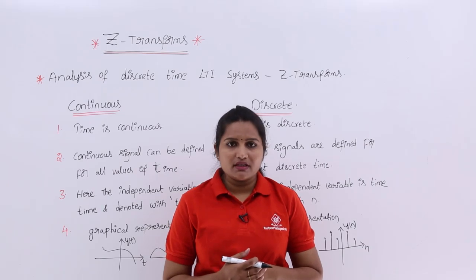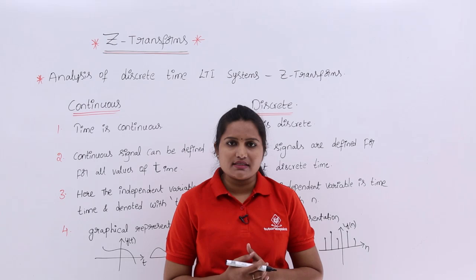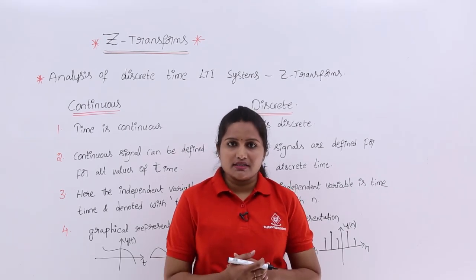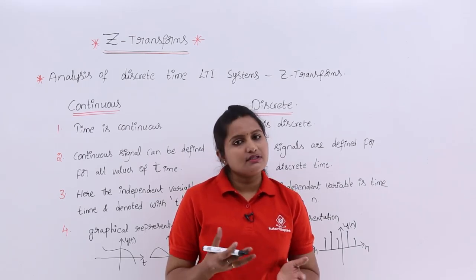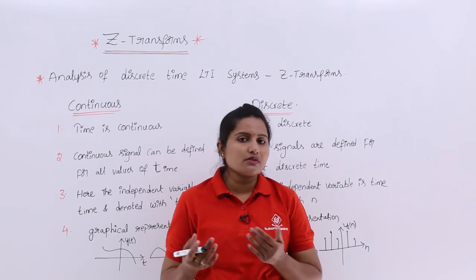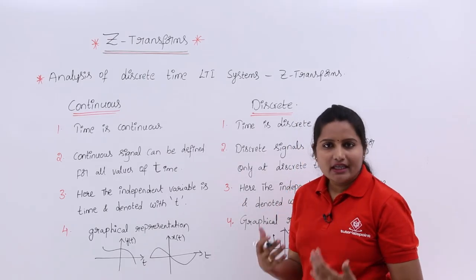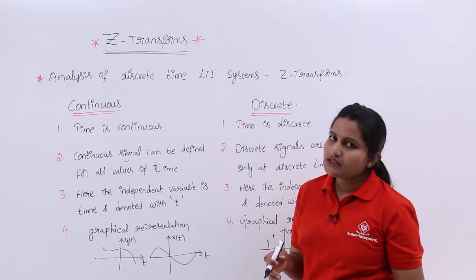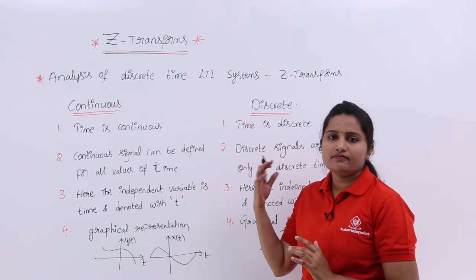If you are going to analyze a discrete LTA system, then you will go for discrete time Fourier transform or Z transforms. You can take either of those — discrete time Fourier transform or Z transforms. By using Z transforms we can analyze discrete time LTA systems. So Z transform is an alternative to the discrete time Fourier transform.